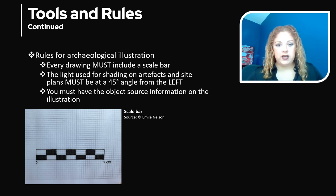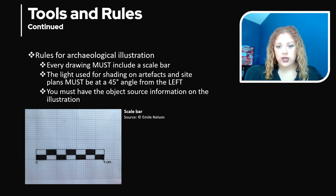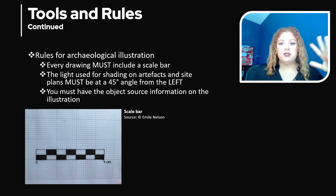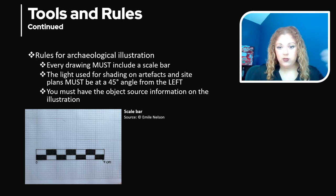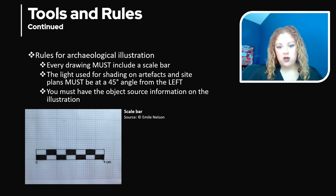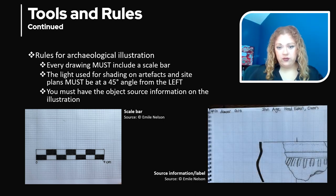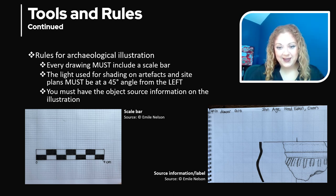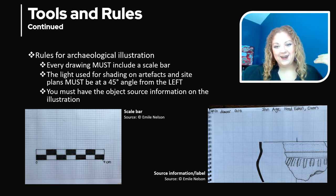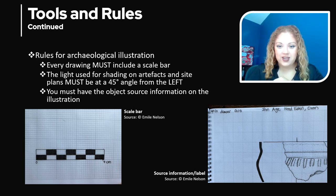You also must have the light you're using for shading an artifact — or just for drawing it — at a 45-degree angle from the left side. That rule kind of transcends borders; everybody uses it, that's just how it's done. And then of course you need to have the object source information on your drawing. I've actually a few times forgotten to put the information down at the very beginning of what I'm drawing, and later had to go back and do all these steps to find the artifact instead of just writing it down at the very beginning.